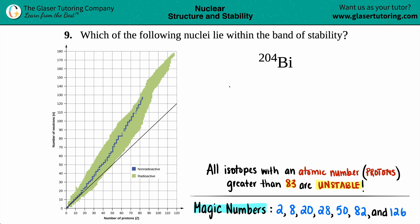Number nine, which of the following nuclei lie within the band of stability, and we have 204 bismuth. Is this type of isotope going to be in the band of stability, which is viewed by this graph over here, which we may or may not need?